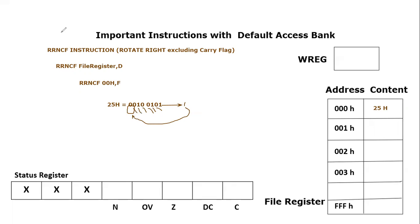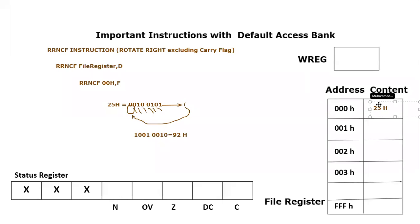After rotating the value 0010 0101 one position to the right, the 1 coming out goes to the most significant bit, giving us 1001 0010. This is equal to 0x92 hex. So the updated content of the file register changes from 0x25 to 0x92 after one rotation unit to the right.